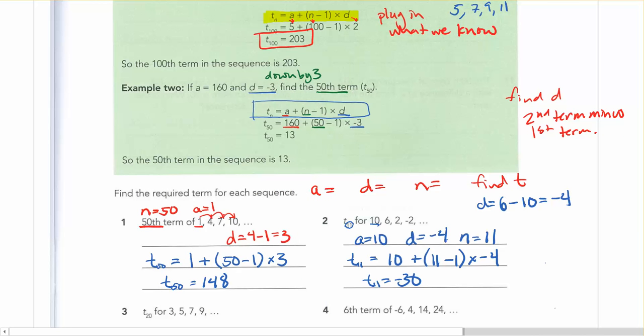So take your time with these and just make sure that you identify what the a, the d, and the n are, and then you're plugging it into your formula and you get the actual value for yourself.